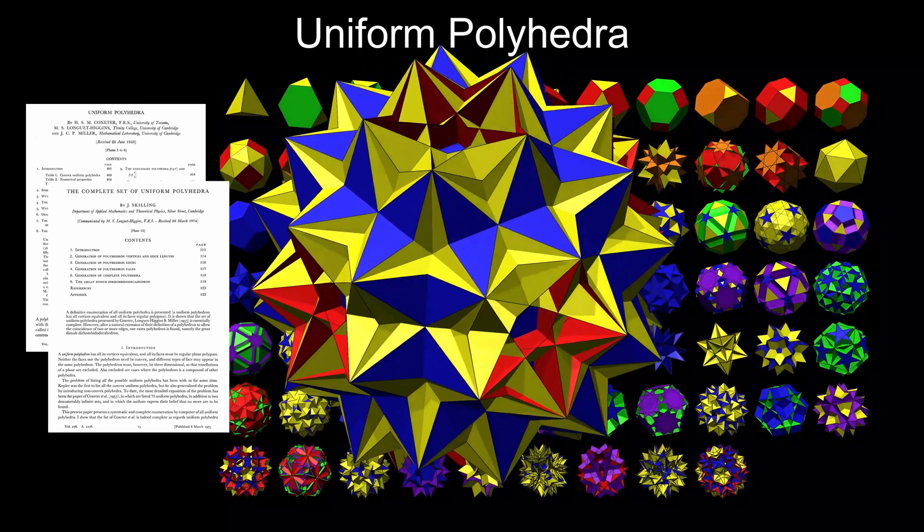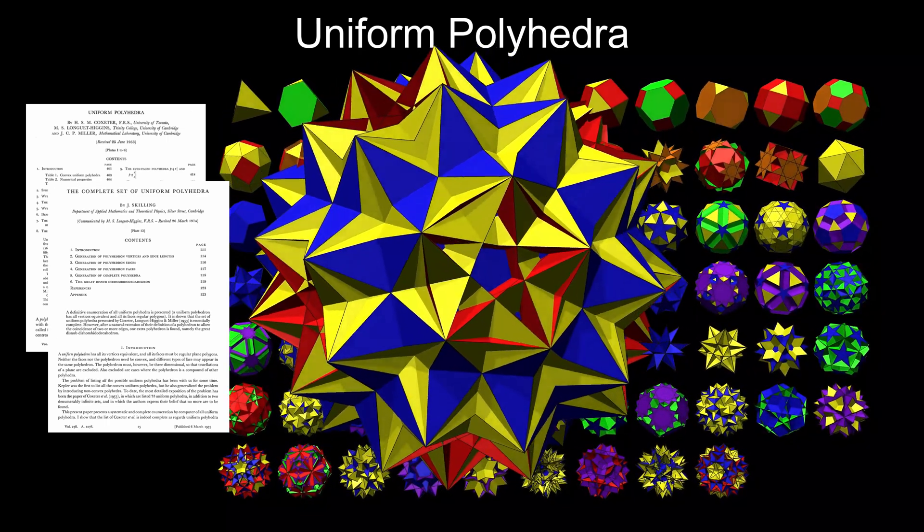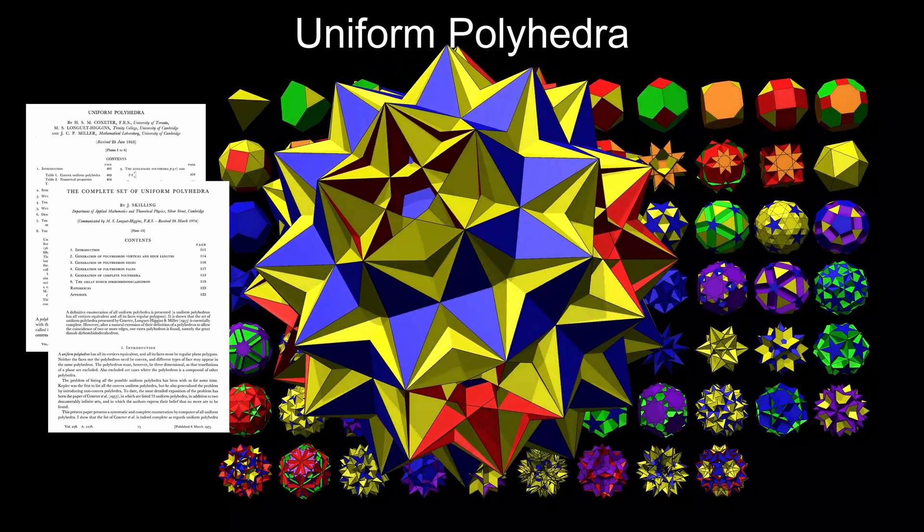This video will explore this shape and explain why it's not usually considered a 76th uniform polyhedron.